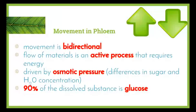Movement in the phloem is bidirectional — it can go up or down. Unlike xylem, the flow of materials is an active process requiring energy. The majority of the process is driven by osmotic pressure, brought about by the difference in sugar and water concentration. Ninety percent of the dissolved substance carried in the phloem is glucose, one of the main products of photosynthesis. The direction of movement depends on where glucose is created versus where it is needed.